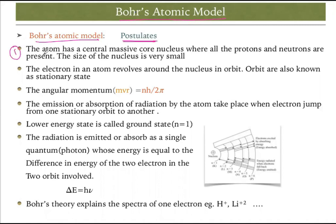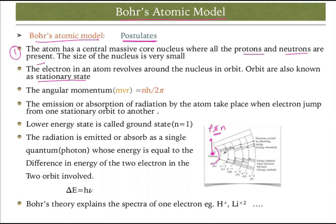Bohr's atomic model discusses several postulates. First: the atom has a central massive core — the nucleus — where all protons and neutrons are present, and the size of the nucleus is very small. Second: the electrons in an atom revolve around the nucleus in orbits known as stationary states. These orbits are not moving and not changing their energy — they are fixed.